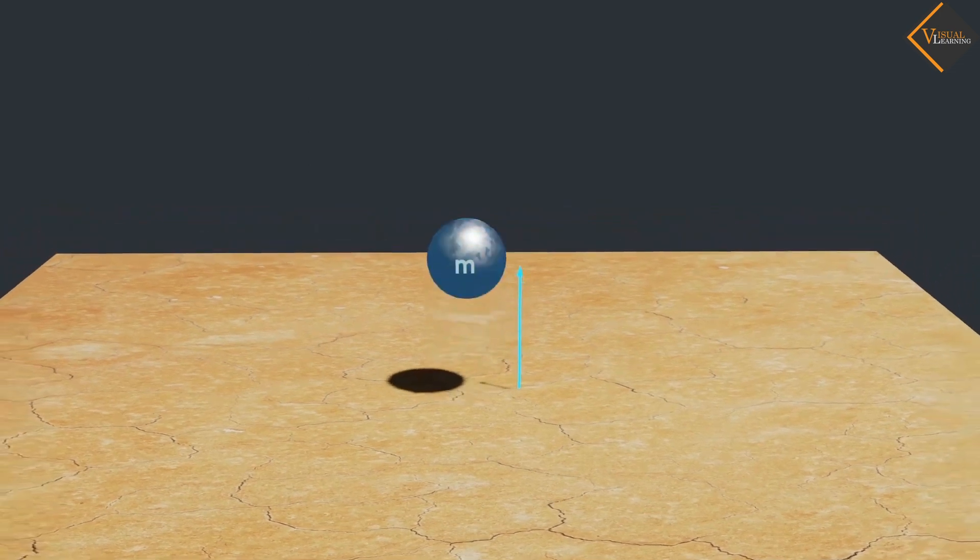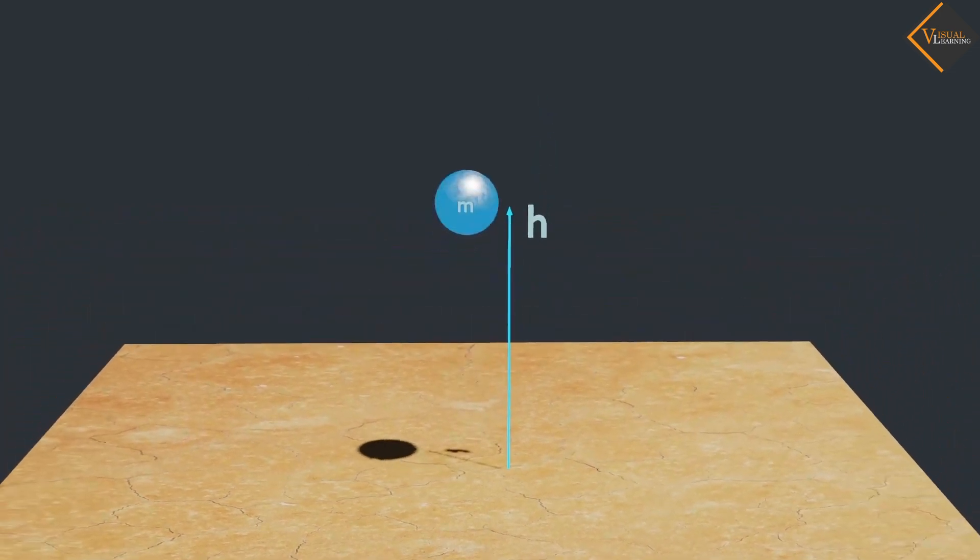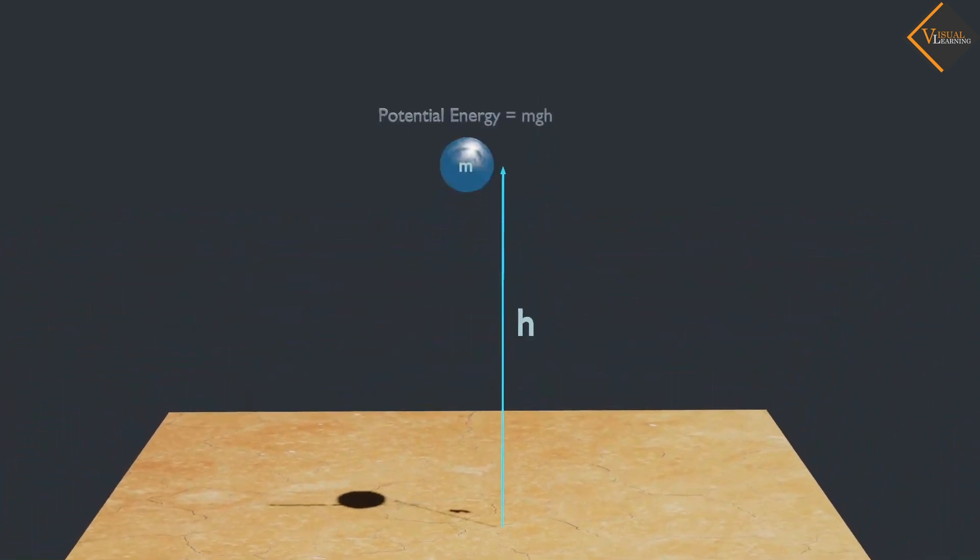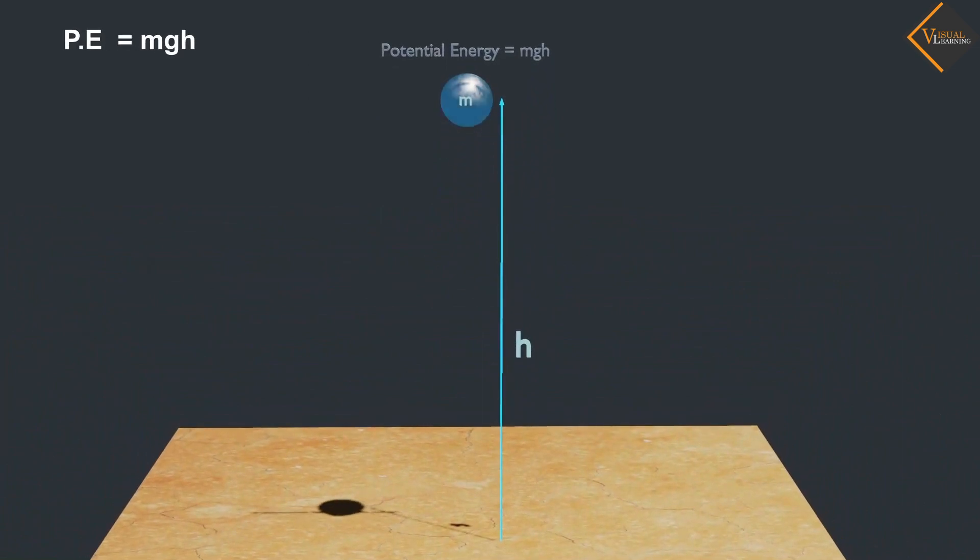Now, raise its height up to h distance from the ground. We know that potential energy increases of the ball due to change in its position.